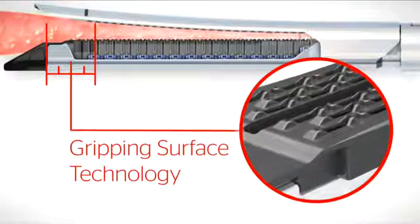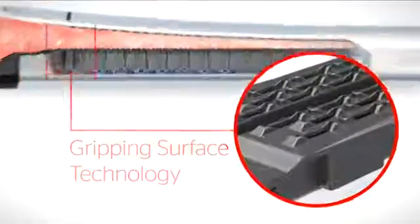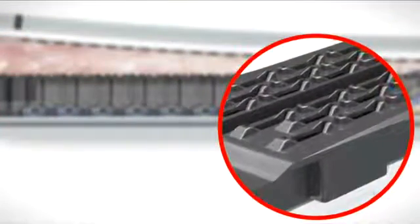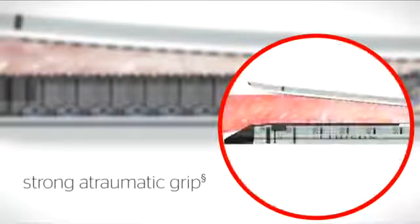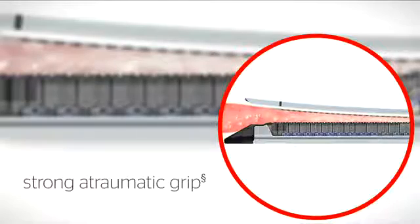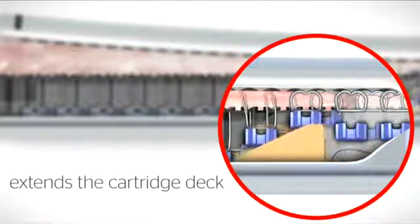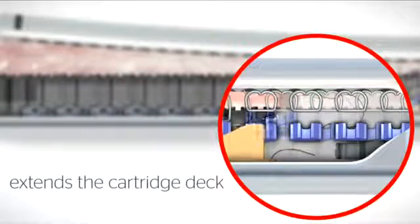The gripping surface technology that can be seen on the reload surface reduces the effects of tissue slippage in two ways. It provides a strong atraumatic grip on tissue during firing to reduce tissue movement, and it extends the cartridge deck to better hold and guide the staples toward the anvil pocket during firing.